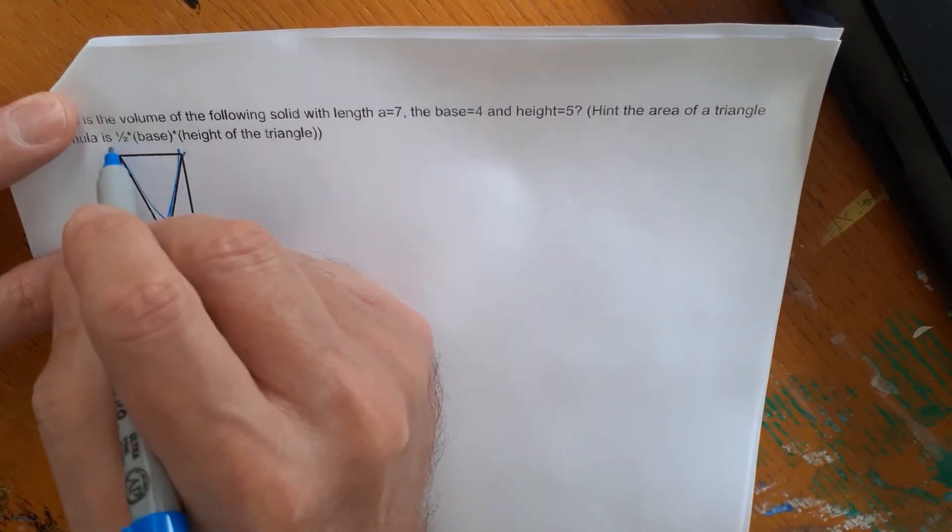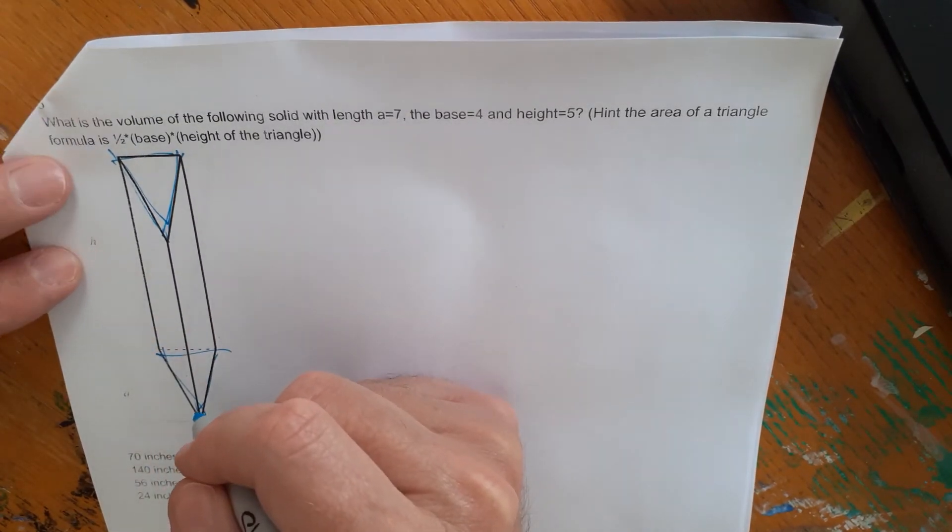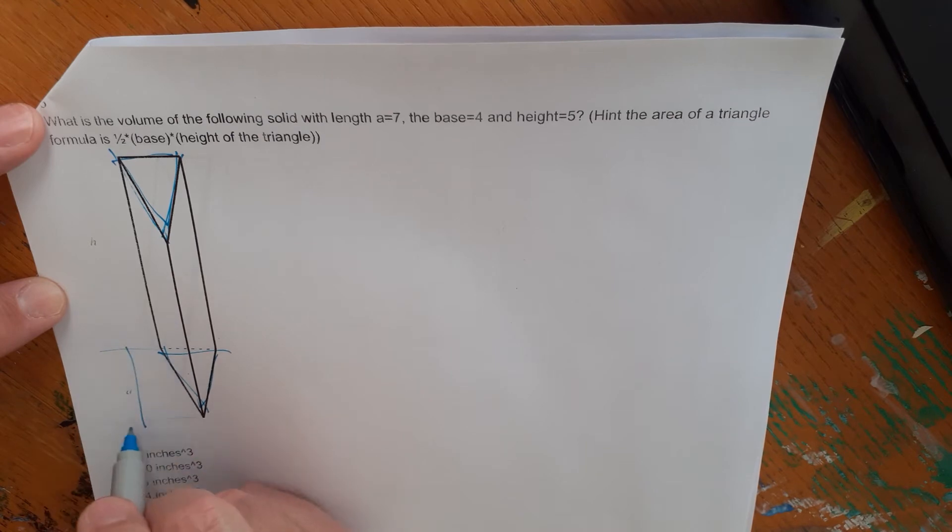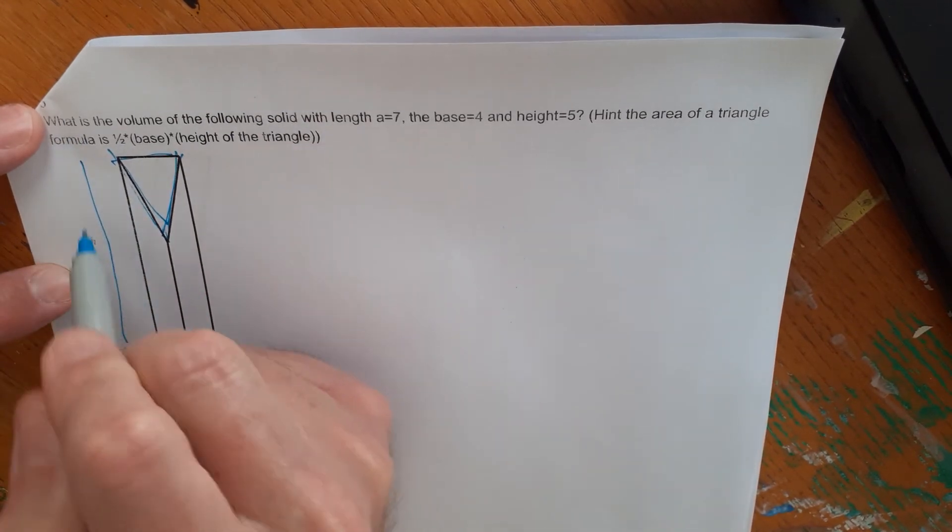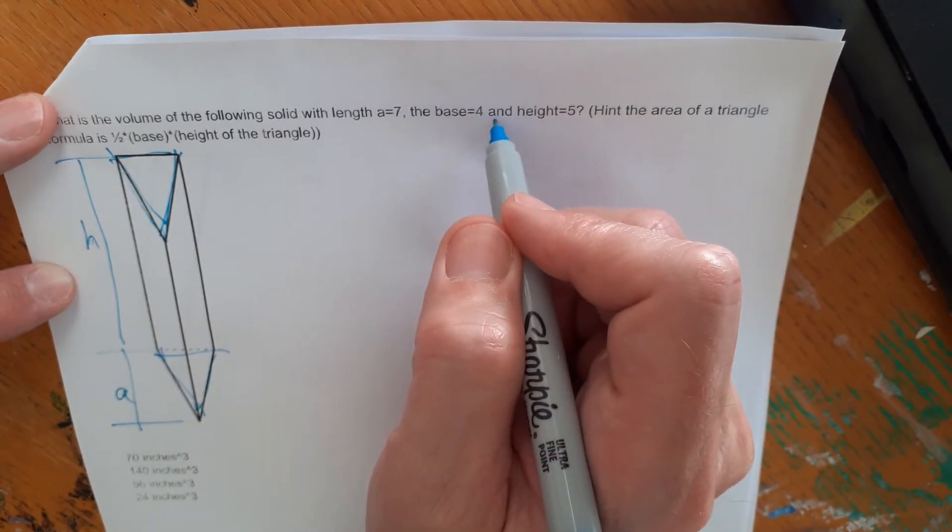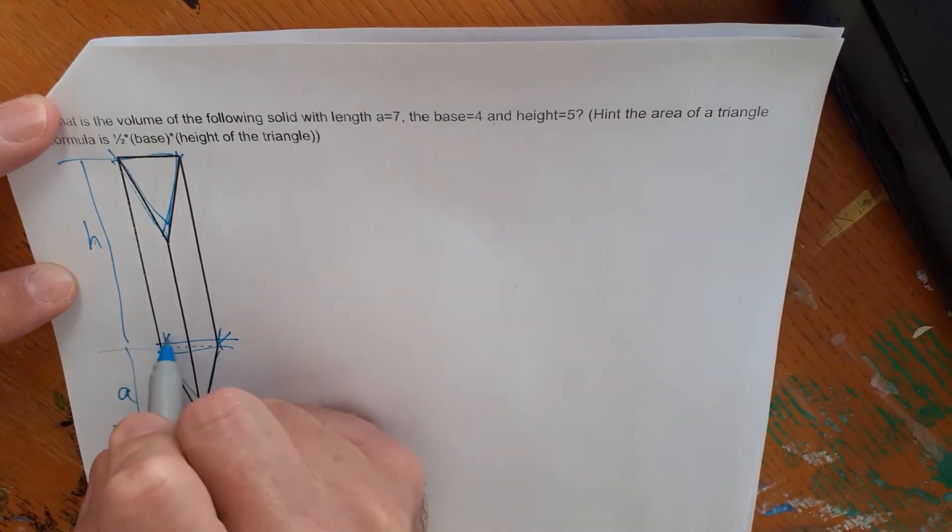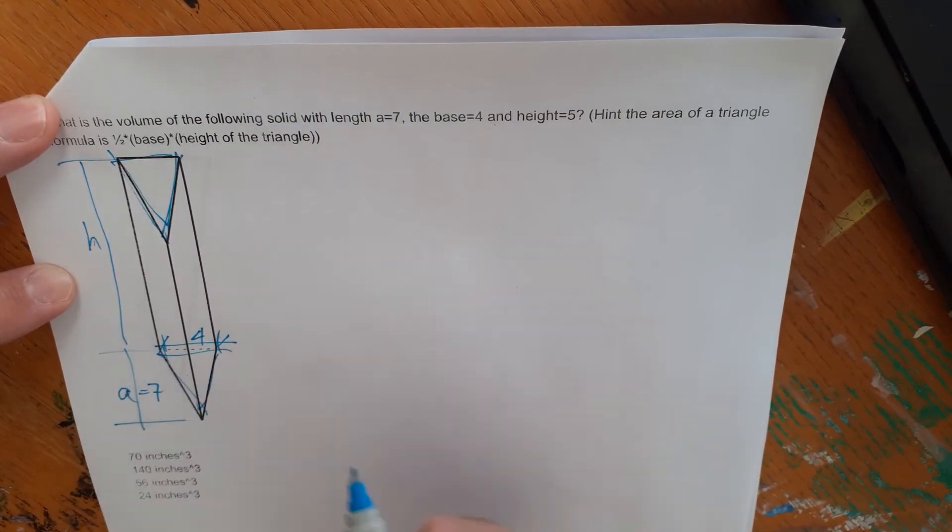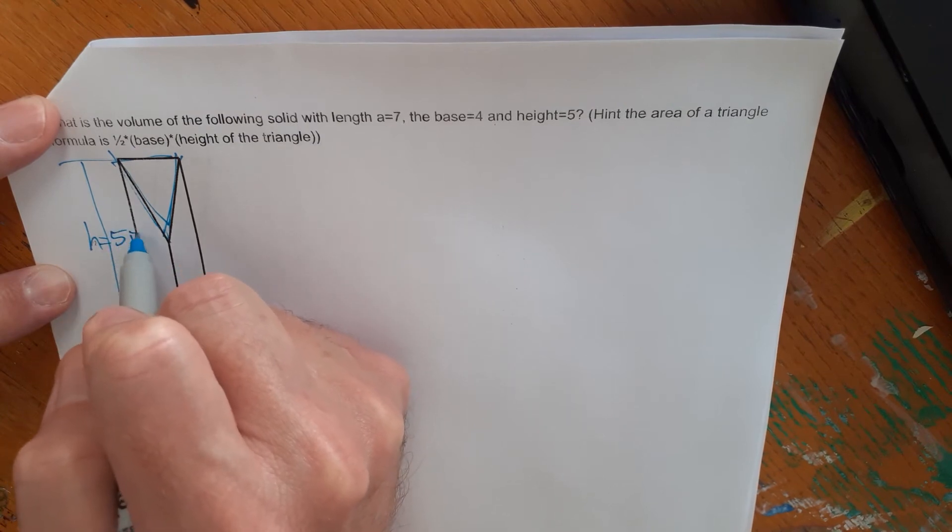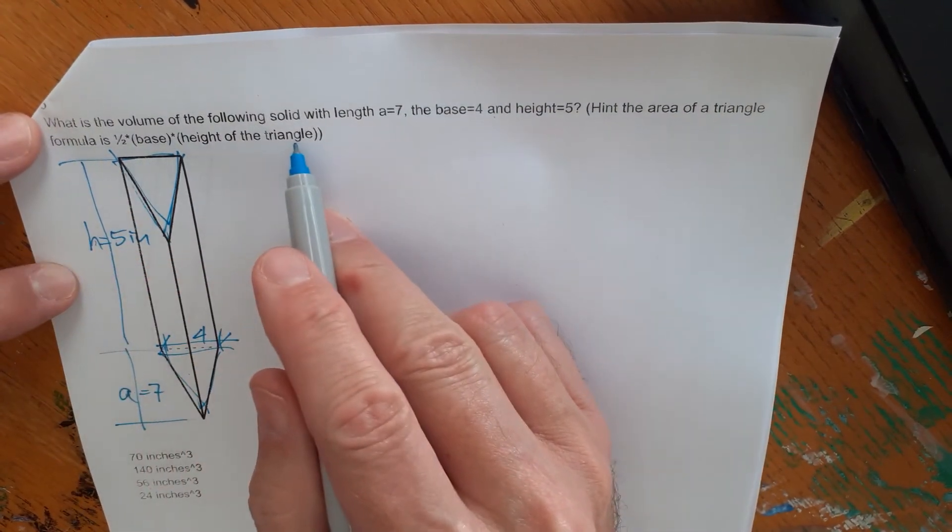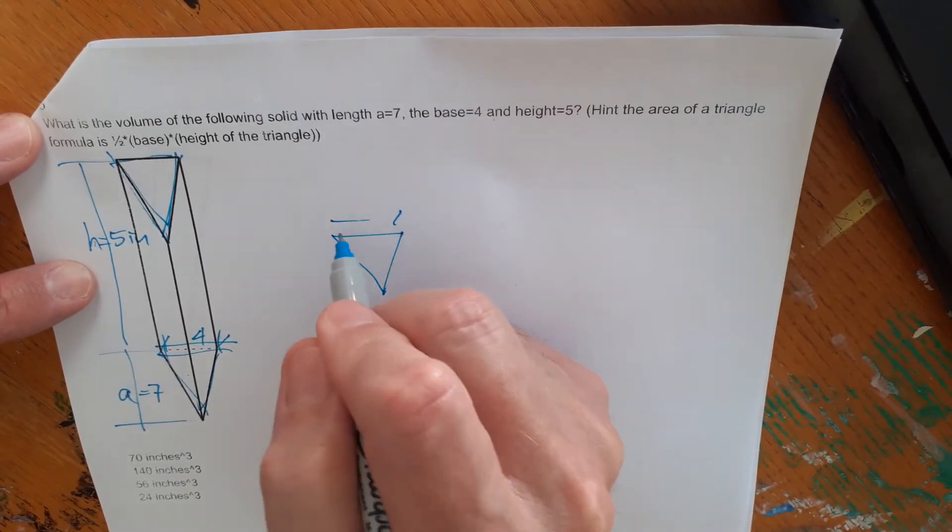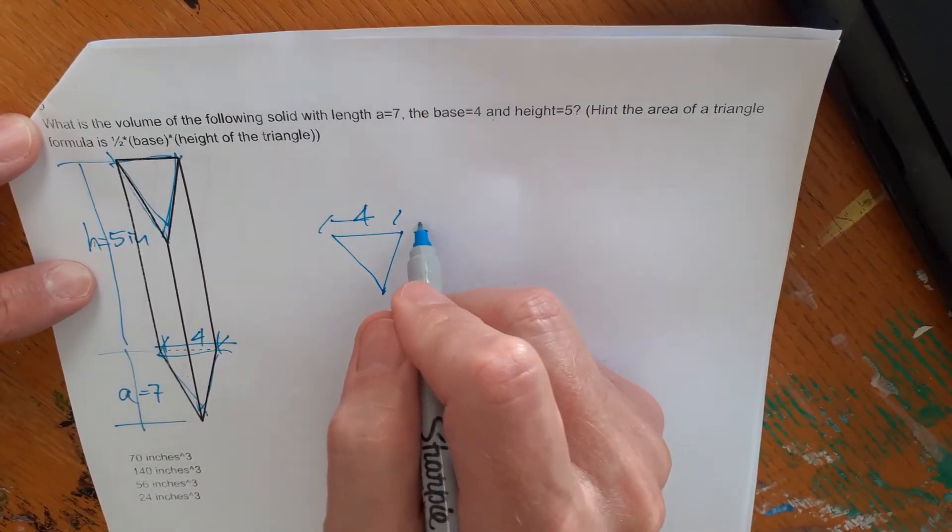This is called a triangular prism. It's got a triangle at both ends, and it's stretched out into a three-dimensional shape. What is the volume of the following solid with length A? So it's a little bit hard to see on this, but from here to here on the triangle it says A. Then it's also got a height buried in here, and it's fading away in the printing. So a length A, a base 4. So base is of the triangle here. Base 4. A length A equals to 7. It looks like we're in inches again, so these are all in inches. A height of 5. So this H is 5 inches. Hint, the area of the triangle formula is one-half base times height of the triangle. Right? So if we have a triangle like this, let's just rotate it a little bit. And this is the base here, 4. And the height of this triangle is 7.